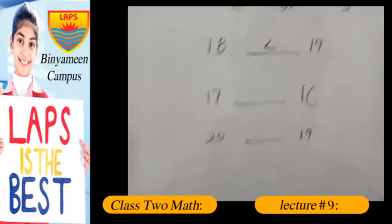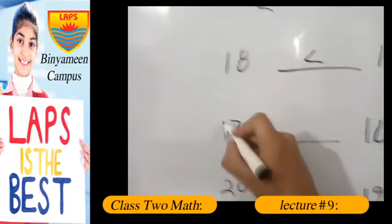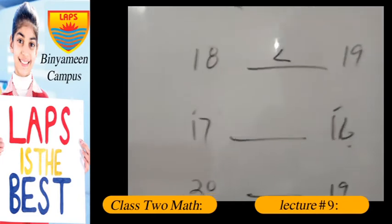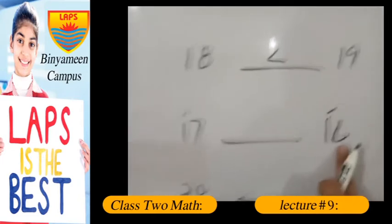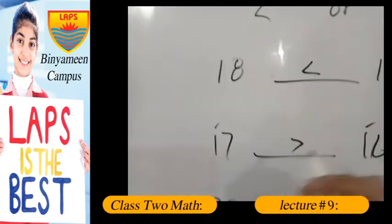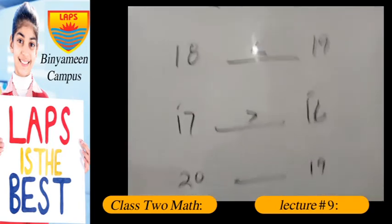Then there are 16 and 17. Both of these numbers, first numbers are same, 1 and 1. So we have to compare the second values like 7 and 6. 6 is smaller than 7, so overall 16 is less than 17.